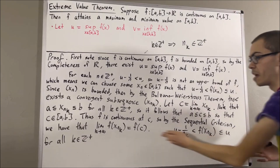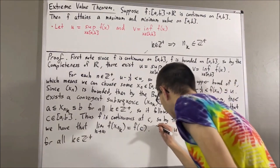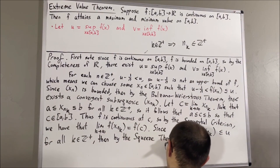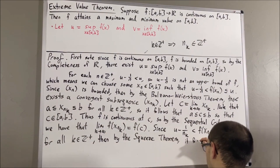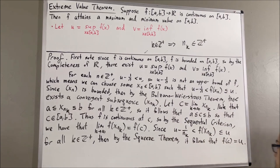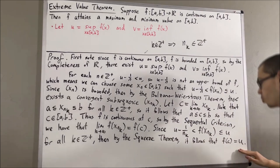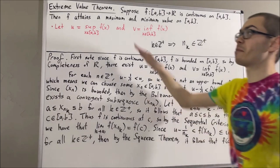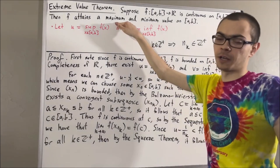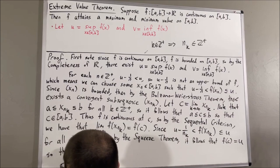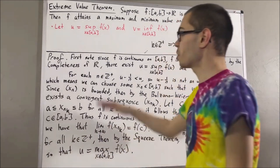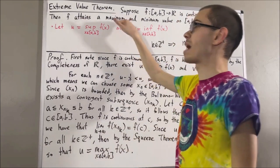Since u − 1/n converges to u, the subsequence u − 1/nₖ also converges to u. The constant sequence of u's converges to u. By the squeeze theorem, f(x_{nₖ}) must also converge to u. In other words, f(c) = u. So u is an output value of the function f, and that is enough to say u is the maximum value for f. We've shown that f has a maximum value.